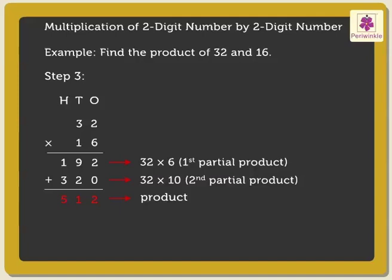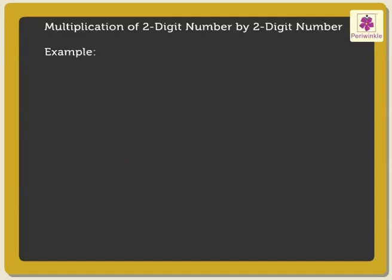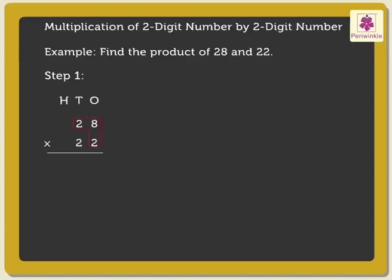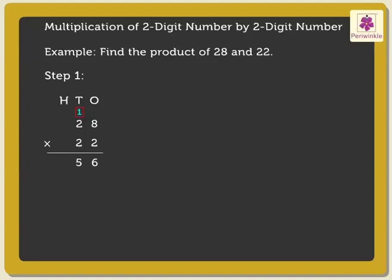Let us solve one more example. Find the product of 28 and 22. Firstly, multiply 28 by the one's digit of the multiplier, that is 2. 8 into 2 is equal to 16. 2 into 2 is equal to 4, plus the carried over 1 is equal to 5. We will call 56 the first partial product.